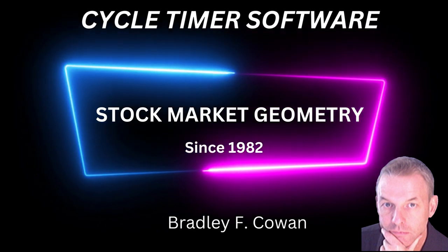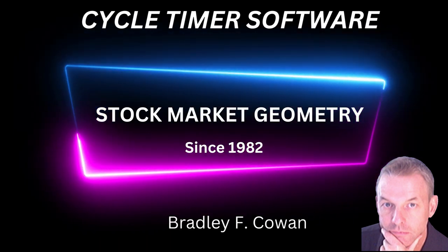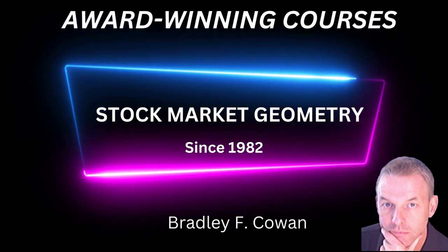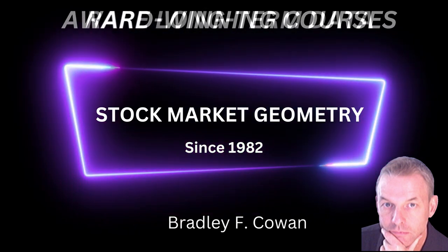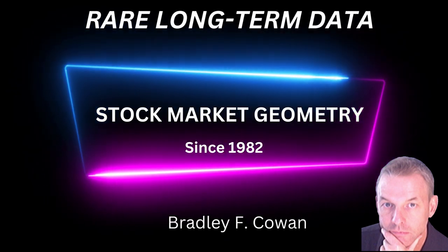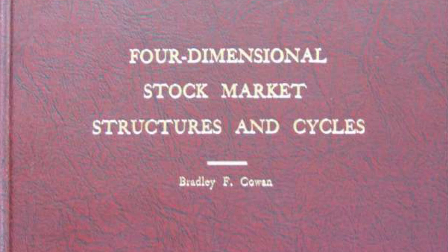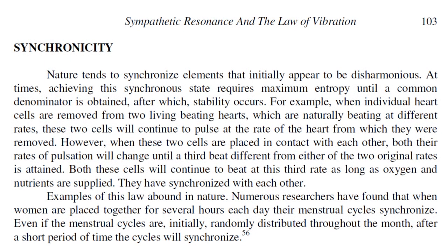This video is a continuation of our free online series exploring unconventional technical analysis techniques. Previous videos studied the synchronization of market cycles with the longitudinal movement of the planets and the moon. Cowan explained synchronicity in his book, Four-Dimensional Stock Market Structures and Cycles. This technique does not try to find a cause and effect relationship between planetary movements and market cycles. Rather, synchronicity explores the relationship that may or may not exist between the two, without any cause and effect assumptions.